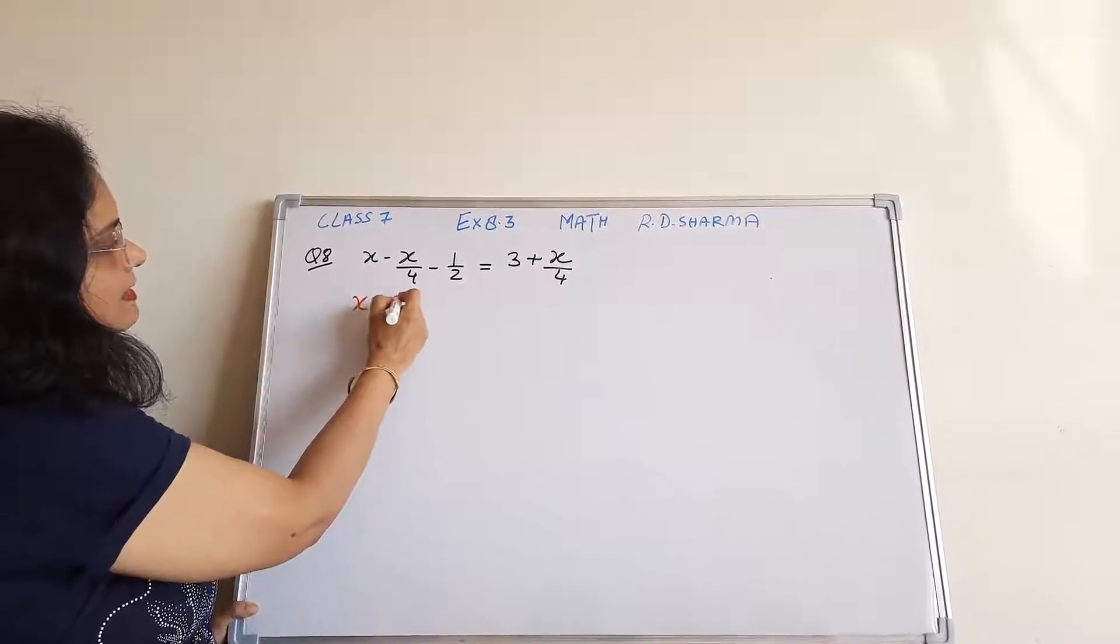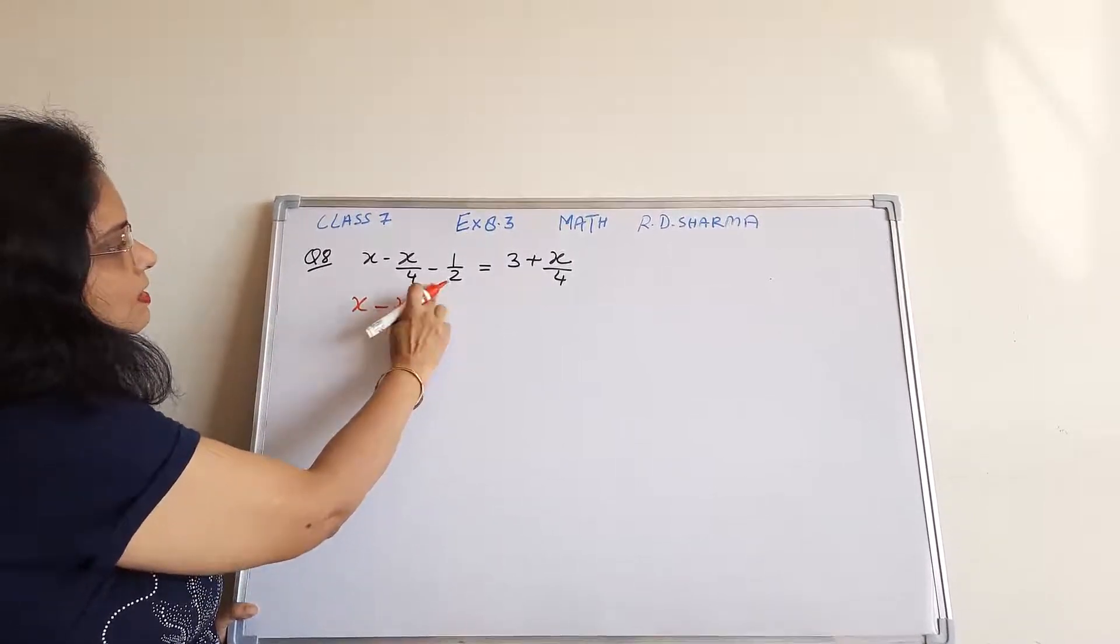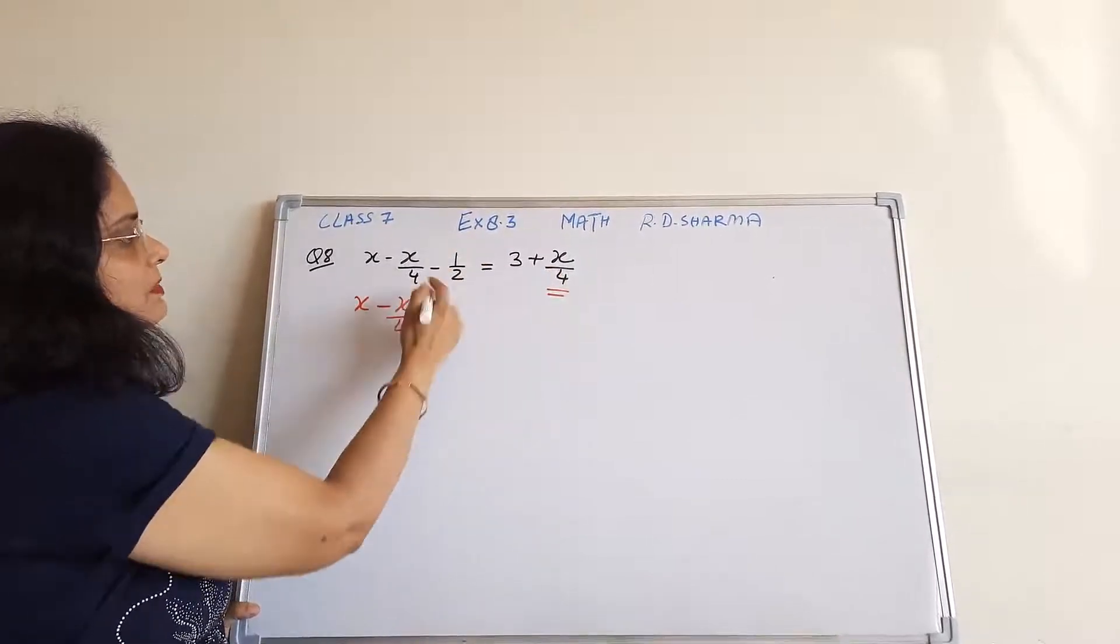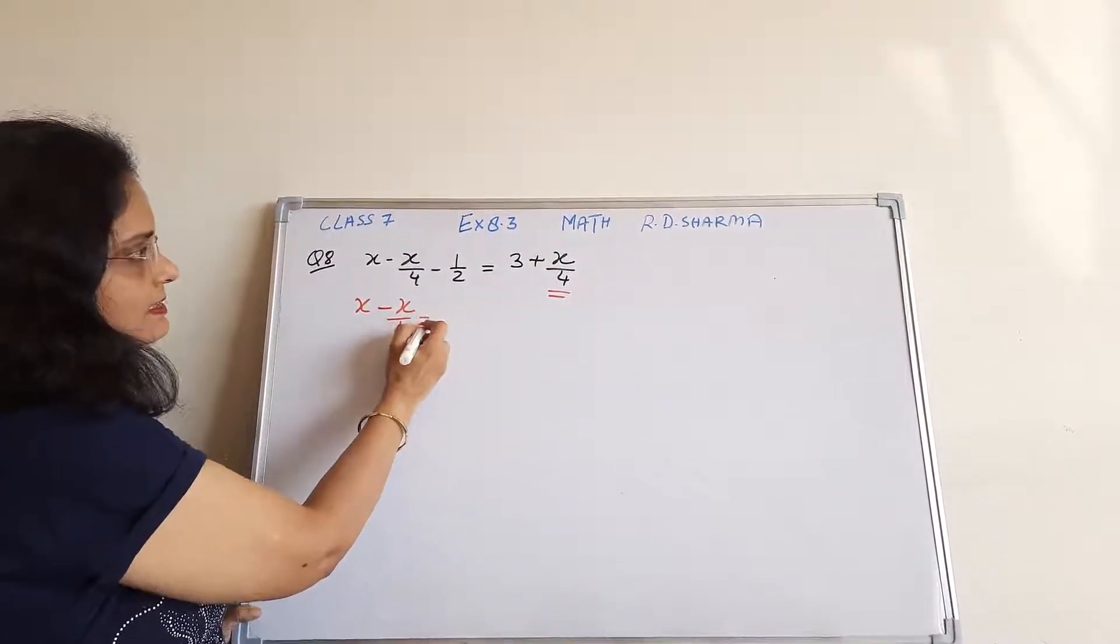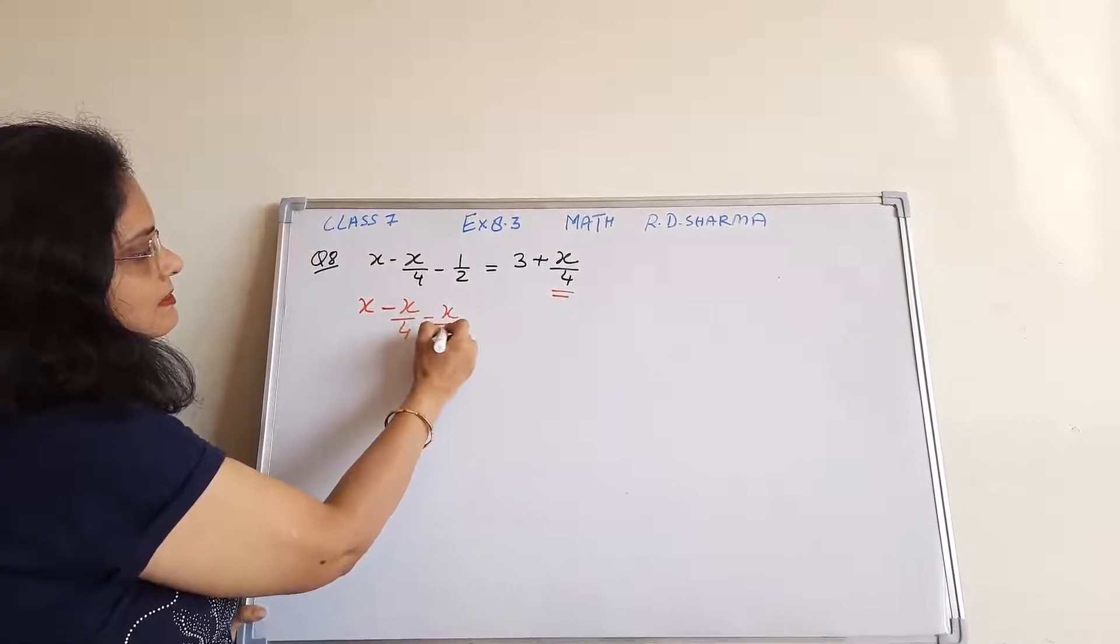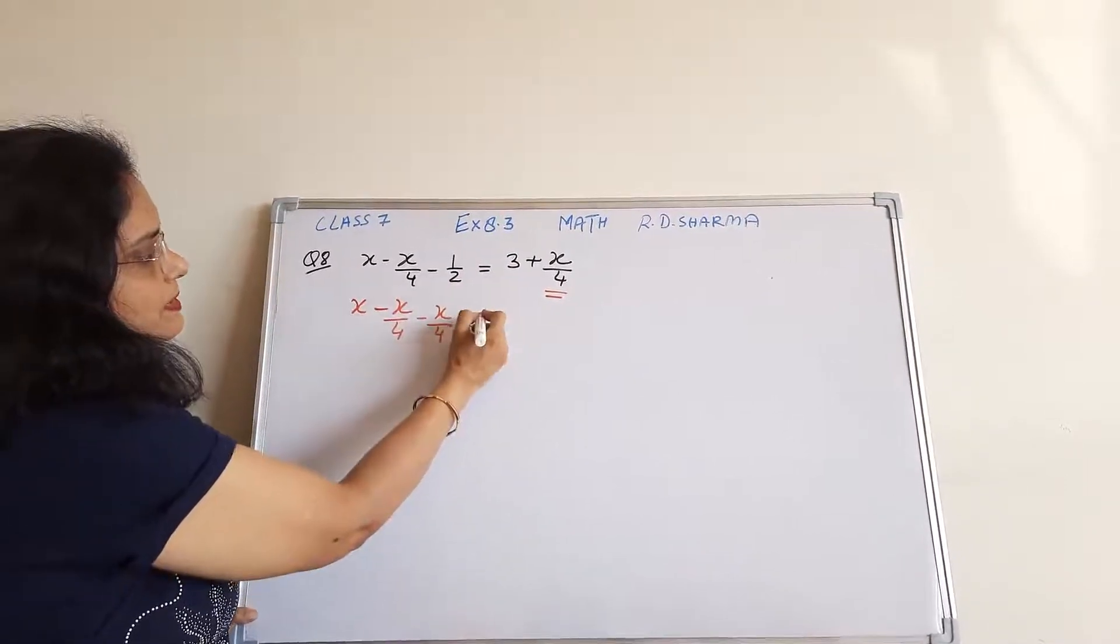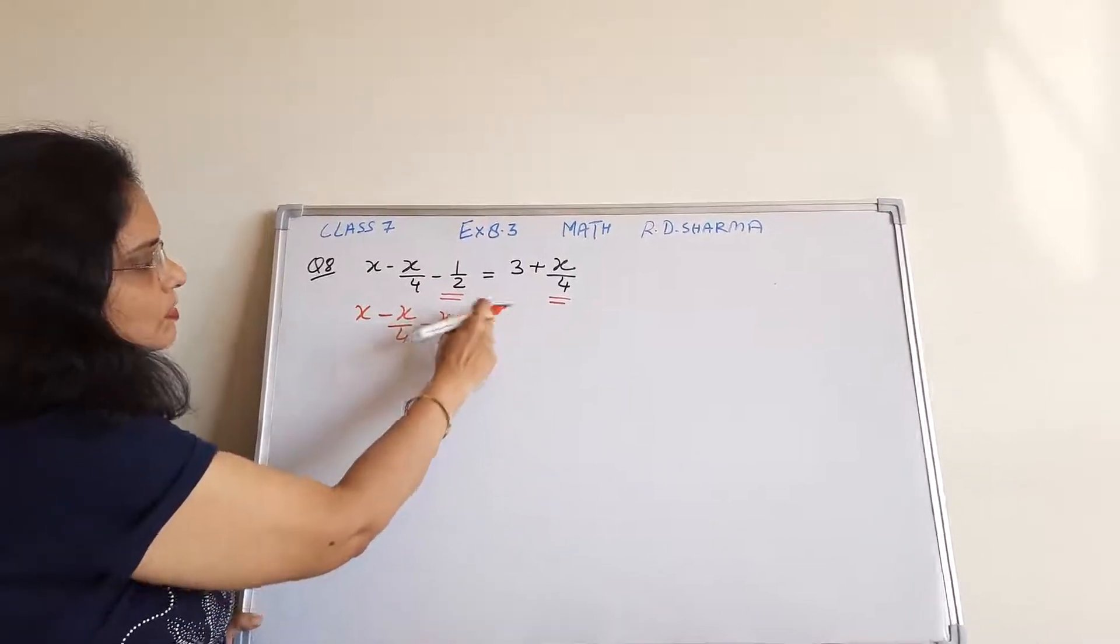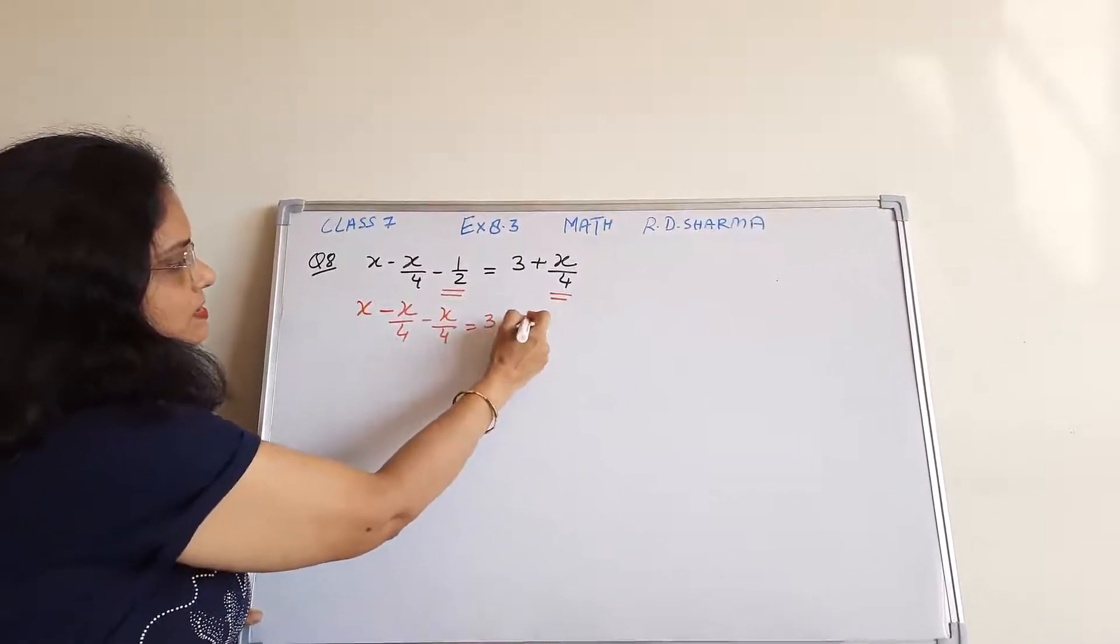It is x minus x upon 4. Now this will go on the right hand side and this is the variable term. It will come on the left hand side with the minus sign. This we copy down as it is and this is a constant term. It will go on the right hand side with the change in sign.